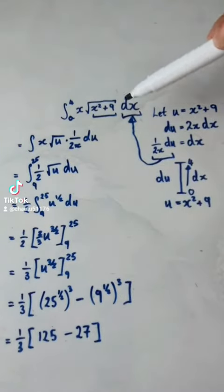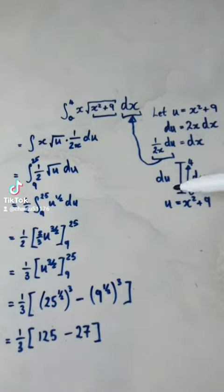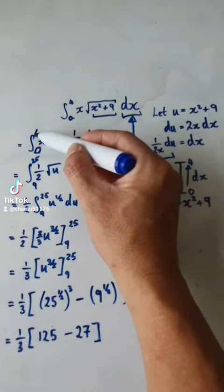So in the dx world, we are integrating from 0 to 4. We need to figure out what we need to integrate from where to where in the du world. So to do this, we need to figure out the limit of integration.